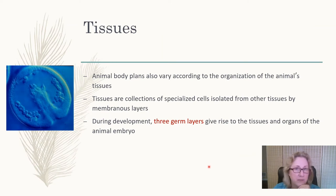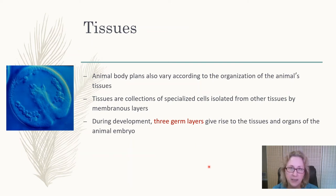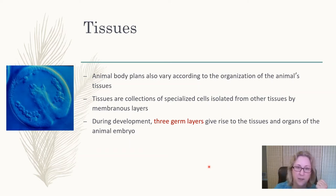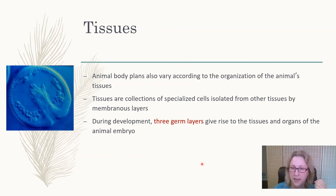Animals have tissues, just like plants have tissues. A tissue is similar cells with a similar function grouped together, and they're often developed into organs that are separated and have an epithelial layer on the outside.